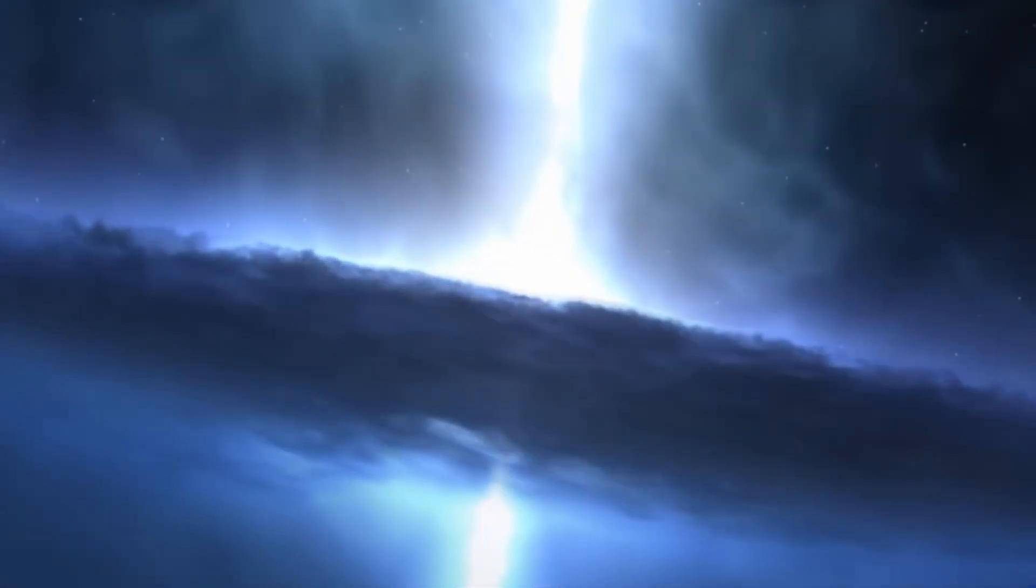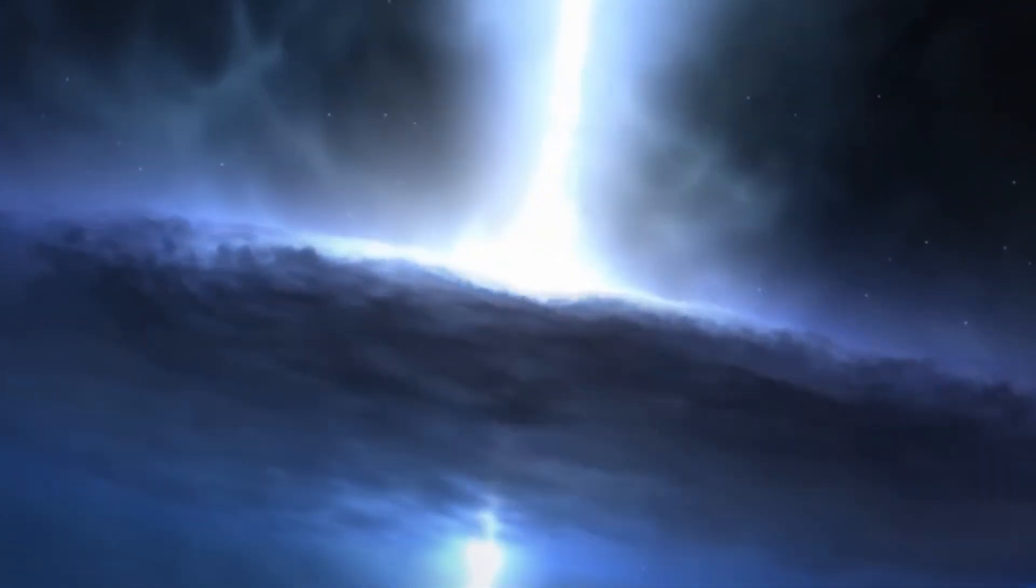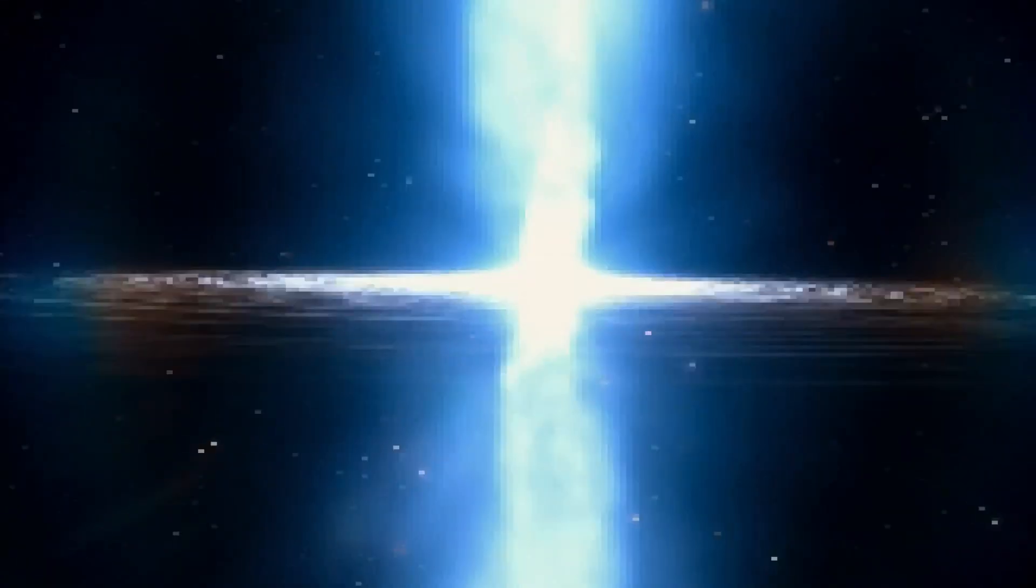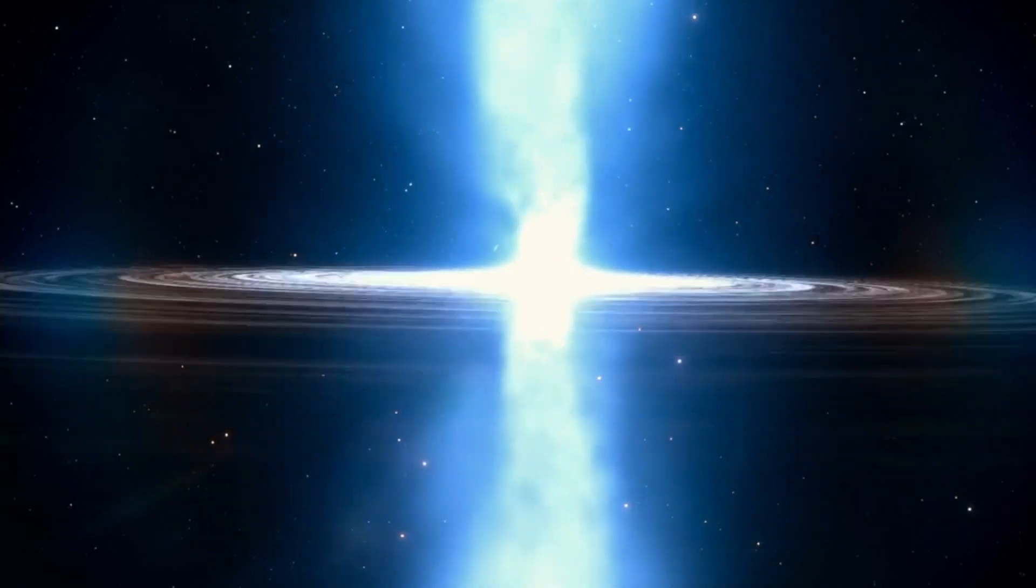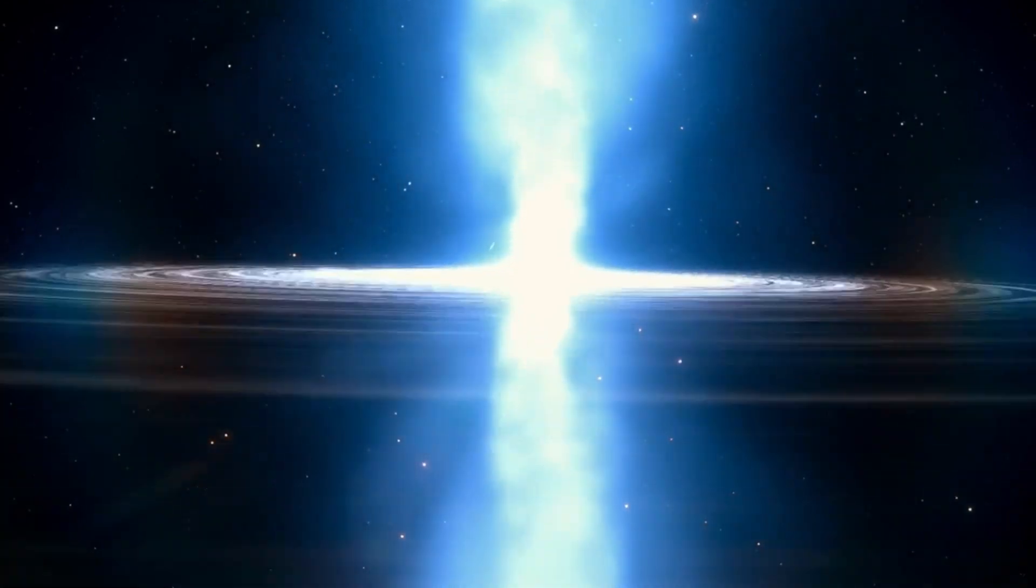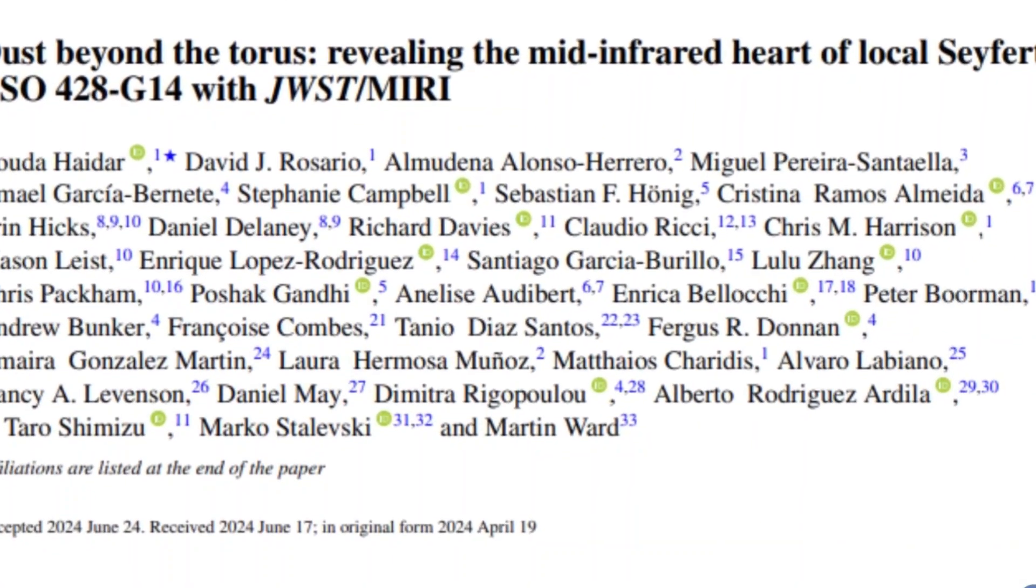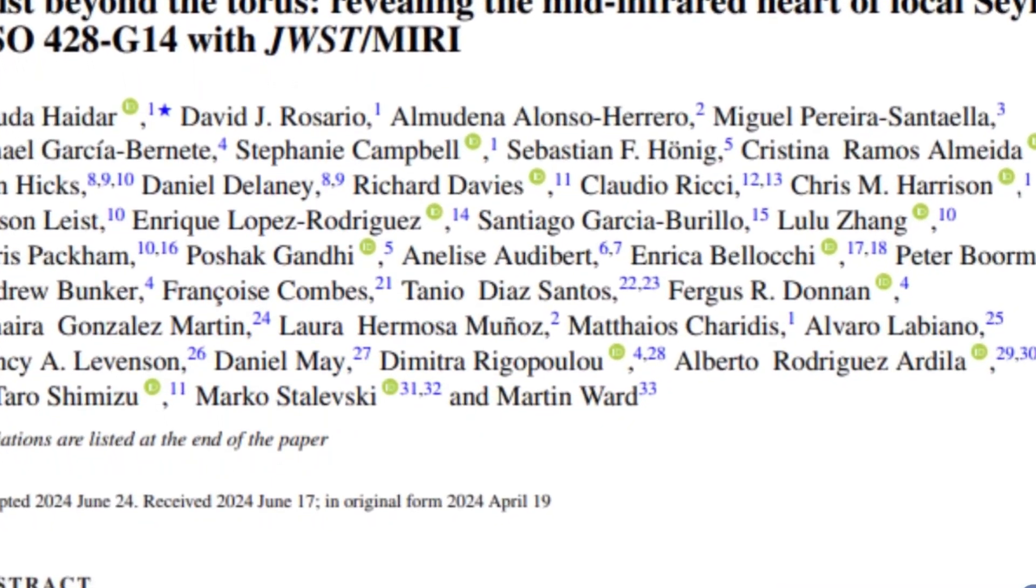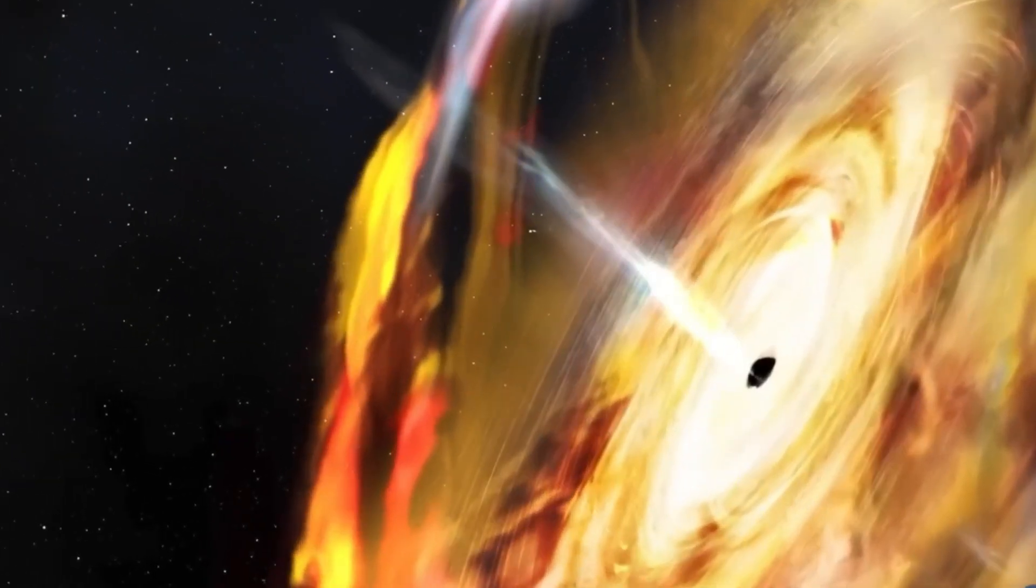Huda Haidar, a PhD student at Newcastle University, leads a study under the Galactic Activity, Torus, and Outflow Survey that analyzed data from the James Webb Space Telescope. The research reveals that polar dust around a supermassive black hole is heated by jets, not by the black hole's radiation, challenging existing models of energy distribution in active galactic nuclei.